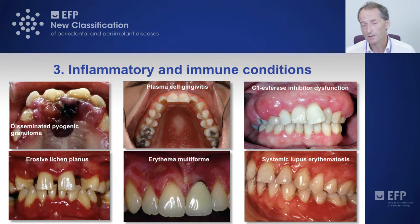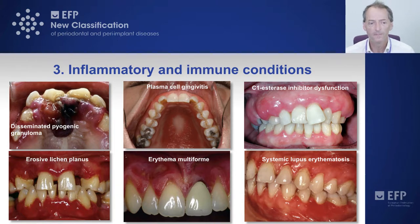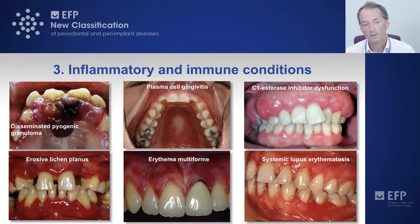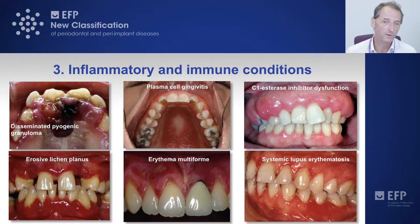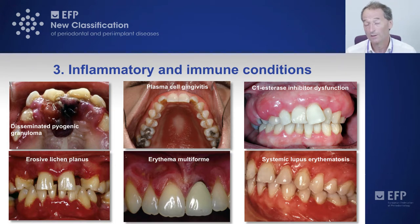Plasma cell gingivitis is an atopic or allergic reaction to something in foods or the environment. It can be very recalcitrant and difficult to treat. In the case shown in the top middle image, this progressed to the vocal cords and the patient lost their voice and had difficulty breathing. Our diagnosis was important because it dictated medical management involving corticosteroids, avoiding the need to surgically biopsy the vocal cords, which could have caused permanent deformity and loss of voice.